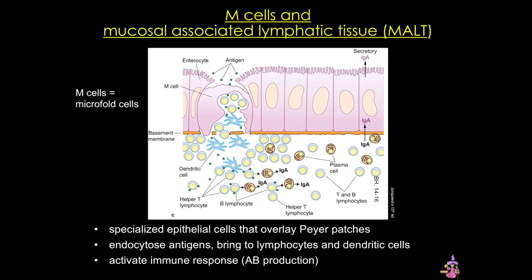Briefly, specialized cells called M cells or microfold cells overlie those Peyer's patches. These cells are critical for immune functions and are considered part of the mucosal-associated lymphatic tissue (MALT). Their function is to endocytose antigens and bring them to antigen-presenting cells and lymphocytes, which is important for activating antibody production.